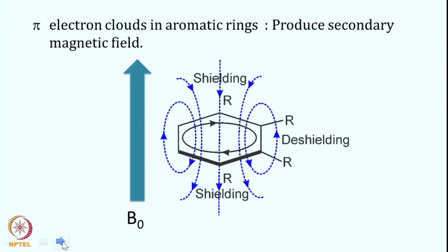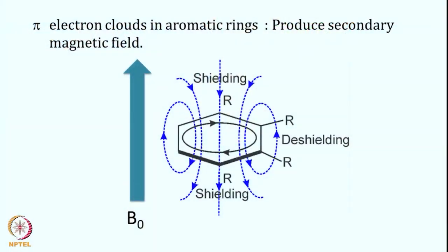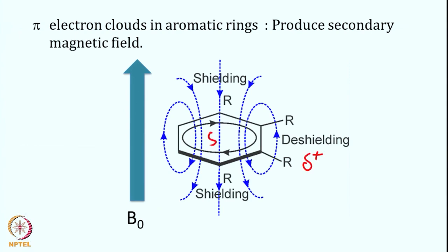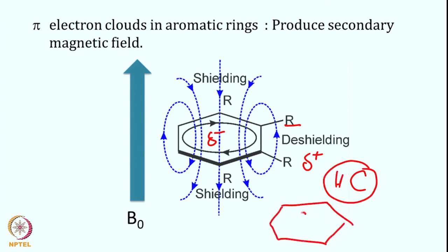The ring current effect arises from circulating pi electrons in aromatic rings such as benzene. This circulation produces an additional magnetic field, making the electron density non-uniform around the ring: less at the edges and more at the center. This creates a partial positive charge at the edge of the ring and partial negative charge at the center. As a result, edge protons are deshielded while the ring center is shielded. This is the ring current effect, which is why aromatic CH protons have different chemical shifts than ordinary CH.